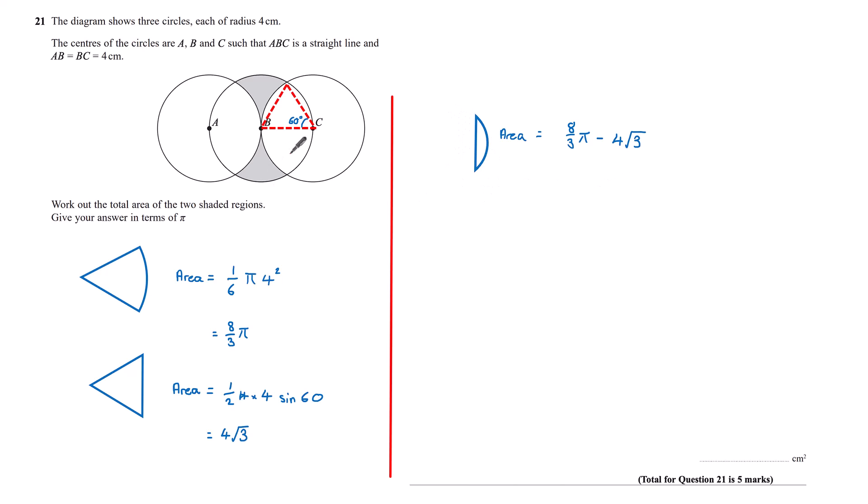Now I have the area of a segment, I can find the area of this shaded region here. So if I look for just one of those, first of all, that would be the area of the sector, which I know to be eight thirds pi minus two of these segments, which I know to be eight thirds pi minus four root three.